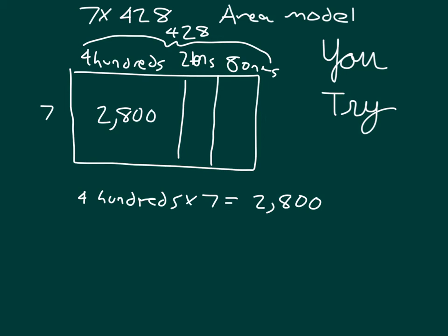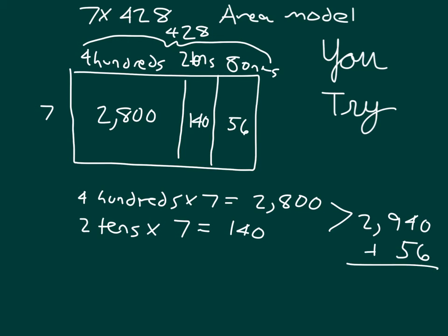Next one is seven times two tens, which is fourteen tens, which is also one hundred forty. If we put those two together, we'd have two thousand nine hundred forty. And then we have one more number to figure out. The other number to figure out is the seven times eight ones, which is fifty-six. So we will add that together. We added together all of those within our area model to get our product of two thousand nine hundred ninety-six.